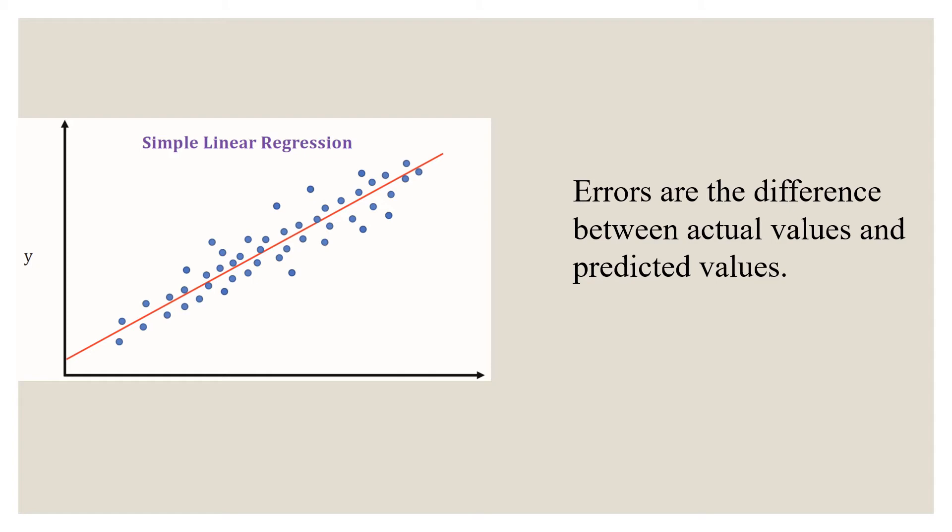If you observe on your left-hand side, you have a simple linear regression. The blue dots that you see over here, these are your actual values, that is your actual data points. And the red line that you see over here is the predicted values. We want most of the points to either lie on the red line or lie very close to the red line.